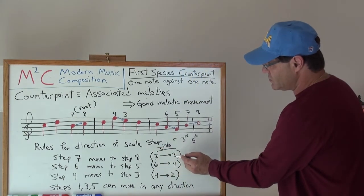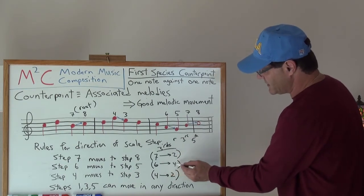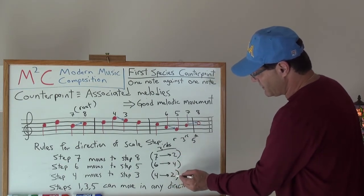Seven would go to a two, it would go up to a two, six would go down to a four, and four would go down to a two.